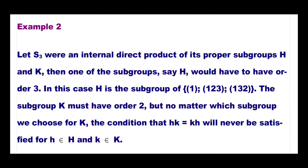An important note: not every group can be written as the internal direct product of two proper subgroups. Example 2: If S₃ were an internal direct product of proper subgroups H and K, one subgroup, say H, would have order 3 and K would have order 2. However, no matter which subgroup we choose for K, the condition hk = kh for all h ∈ H, k ∈ K is never satisfied.